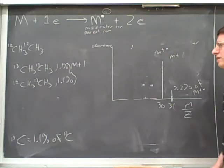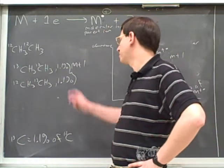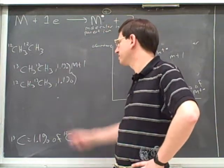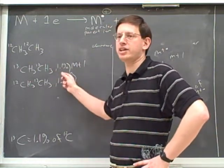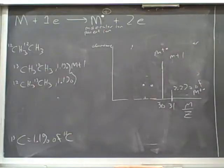If you only have one carbon, then the M plus 1 peak is 1.1% of the parent. But if you have two carbons, you have twice as much chance to have a carbon-13. With twice as much chance to have a carbon-13, the total amount of molecules with carbon-13 would be 2.2%.